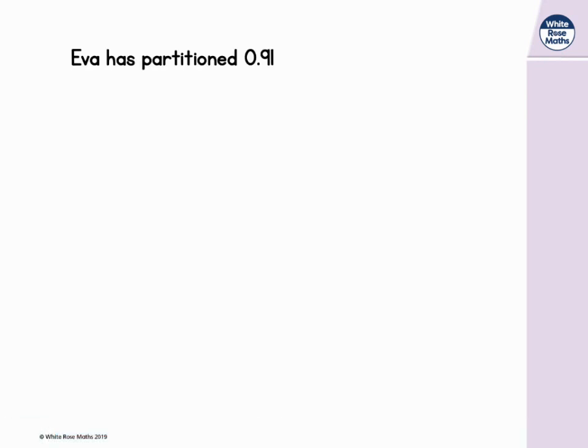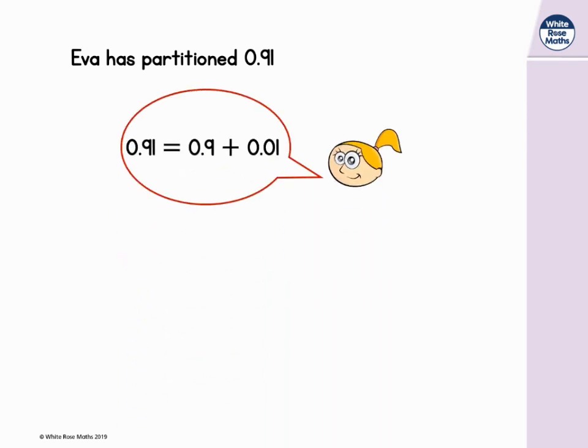Eva has partitioned zero point nine one. She says that zero point nine one is equal to zero point nine and zero point zero one. Nine tenths and one hundredth. Eva's way is the most obvious way, but is it the only way?